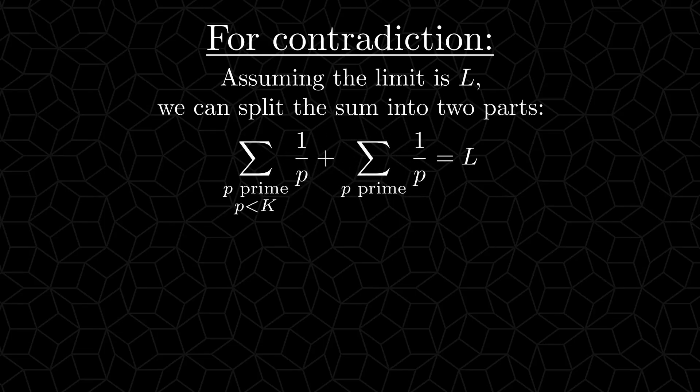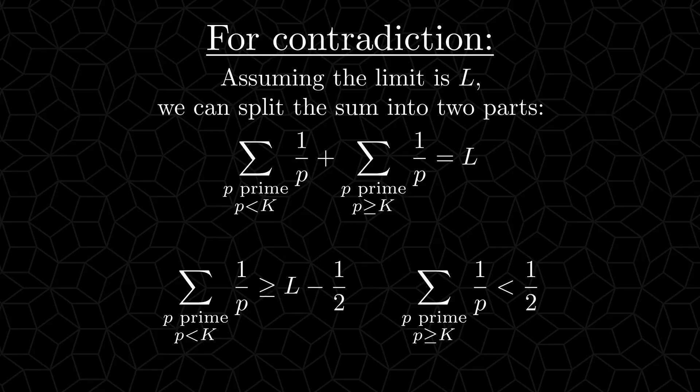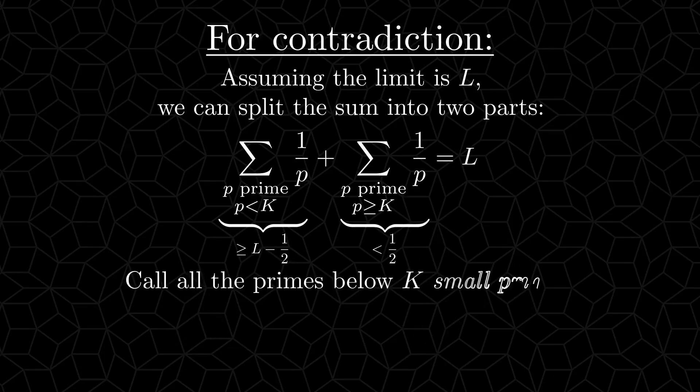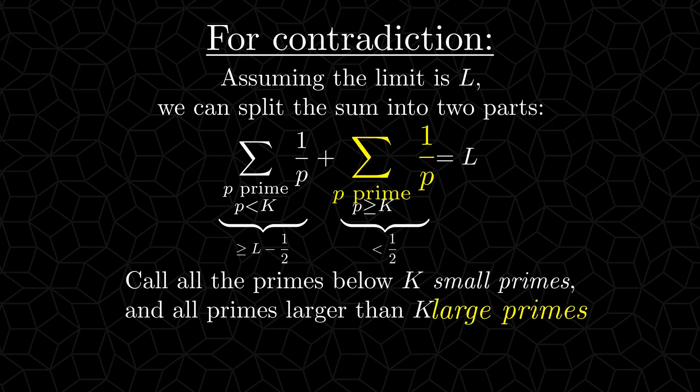One for all the primes smaller than some k, and one for all the primes larger than some k, in such a way that the first sum takes us almost all the way up to L. In fact, it takes us to within one half of L. And the second sum, with all the rest of the primes, will take us the rest of the way. We shall call the primes in the first sum, the primes that are less than k, small primes. And the primes that are larger than k, in the second sum, we shall call large primes.